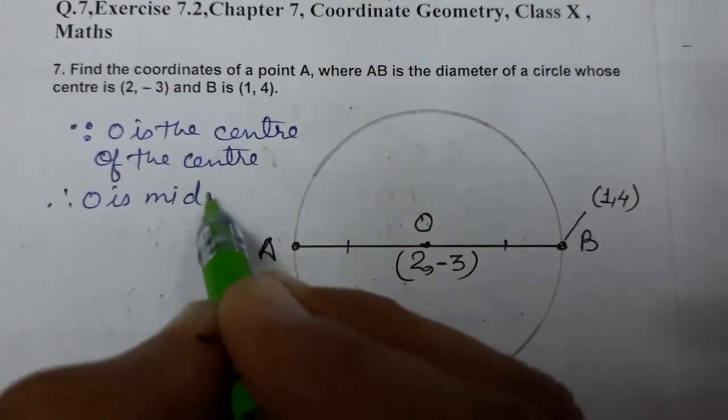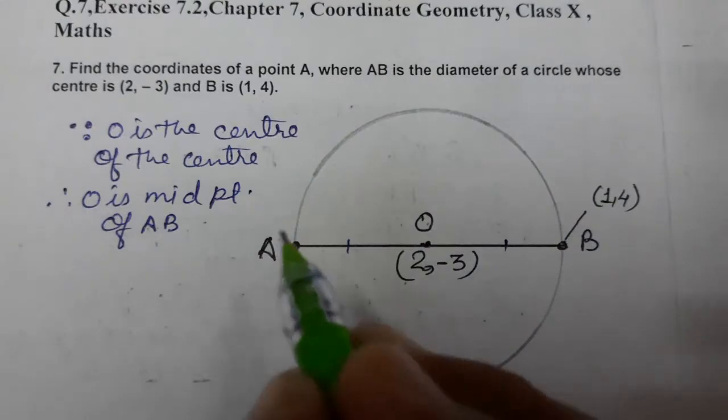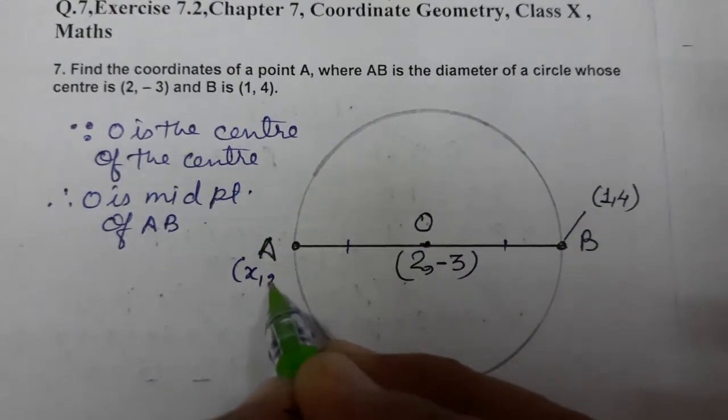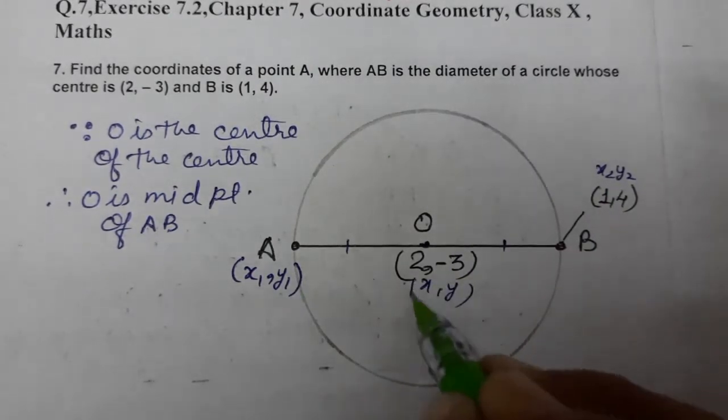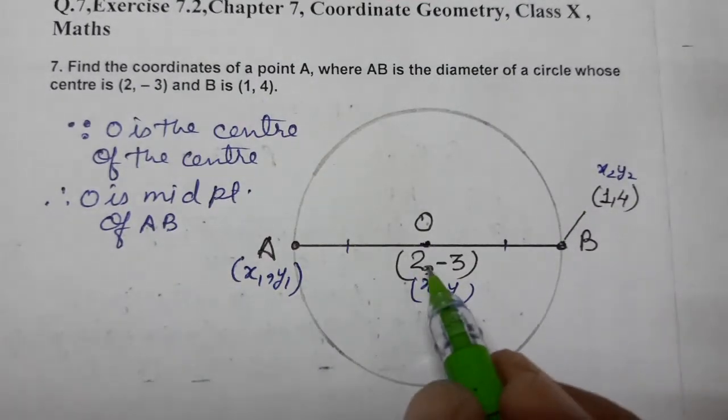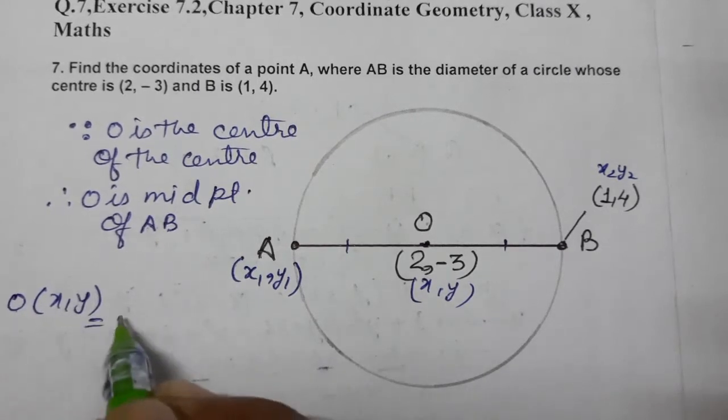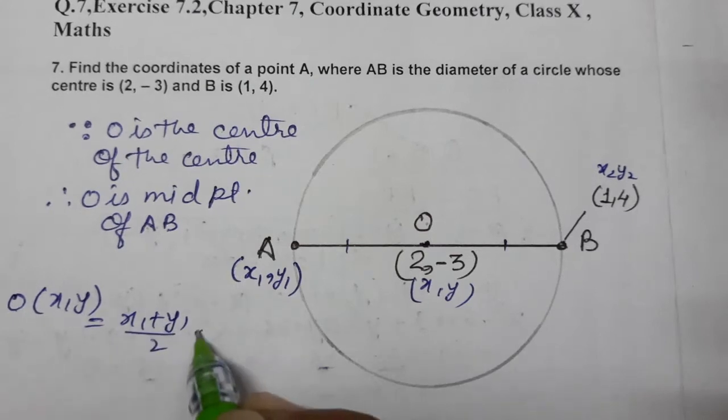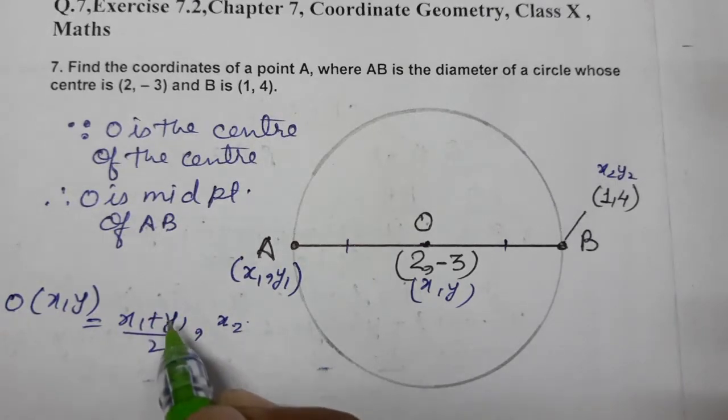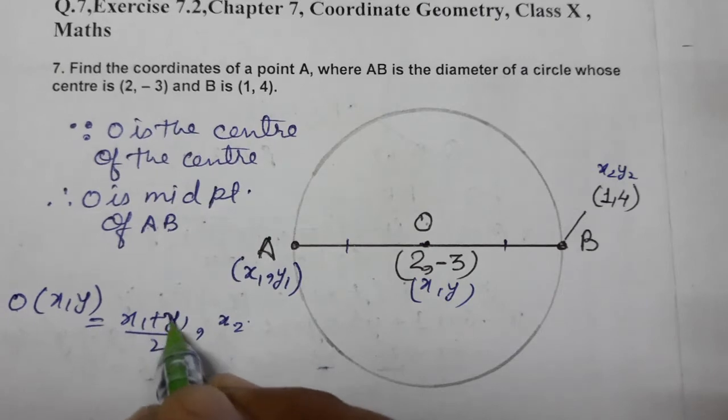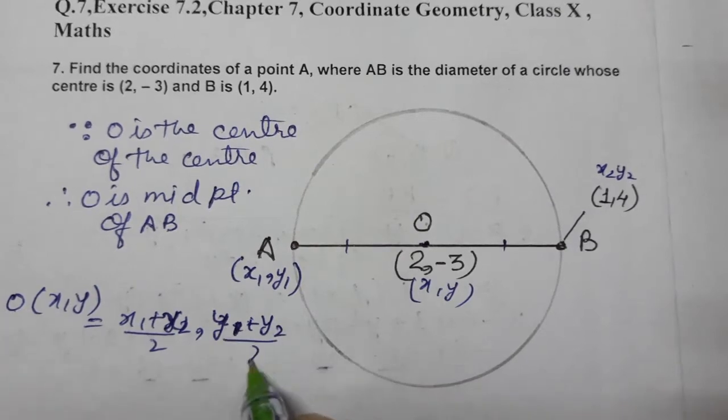Using the midpoint formula, we know that O(x, y) equals (x1 plus x2) by 2 and (y1 plus y2) by 2. This is the midpoint formula.